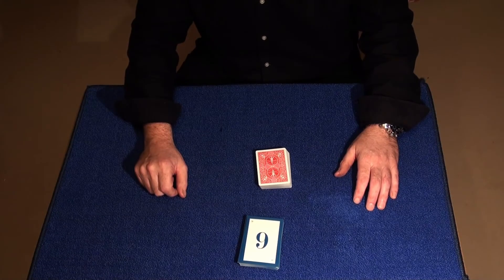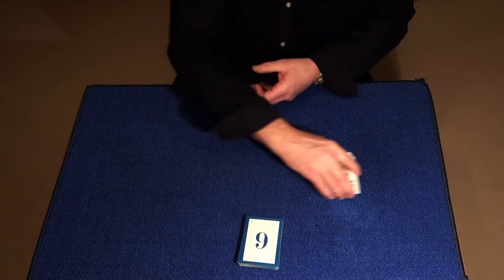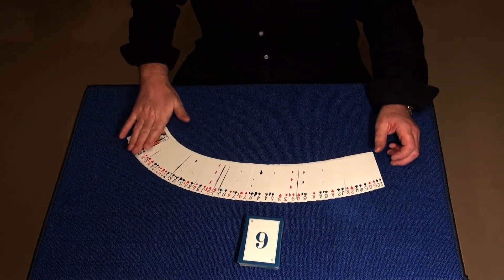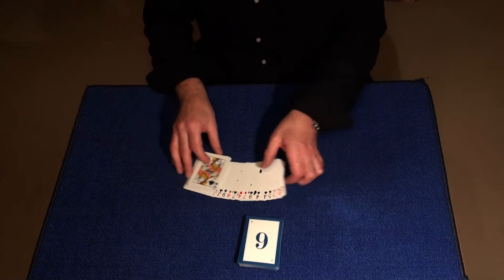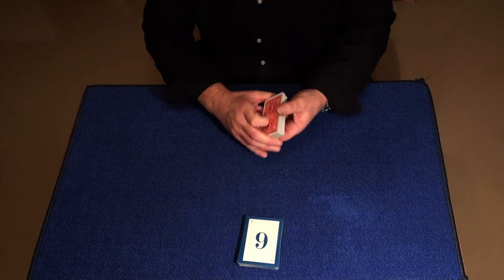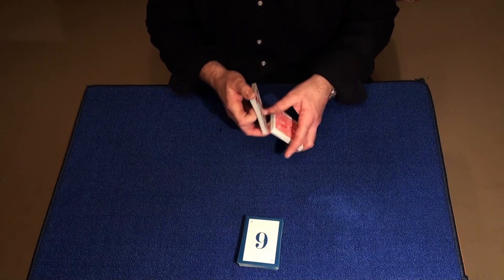Welcome to the Easy Any Card at Any Number. The spectator can choose a card facing up, just in case they think you're trying to force them a particular card, or they can do it facing down. Let's say for this particular instance I want to do facing down.